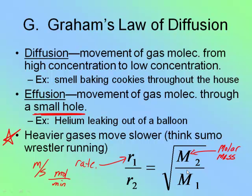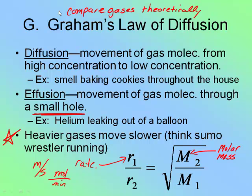These problems are very simple. I'm not going to do example problems right now because we don't deal with them that much — they're mostly theoretical. Be prepared to compare gases theoretically. There are some examples on the review sheet with calculations, but mostly I'm going to make you do it in words: predict a gas that would be able to move faster than methane, and that sort of thing. And that's Dalton's Law and Graham's Law for gases.